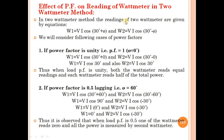Next point: the effect of power factor on the reading of the watt meter in the 2 watt meter method — this topic is frequently asked in exams. In the 2 watt meter method, the readings are given by: W1 = V·I·cos(30° + φ) and W2 = V·I·cos(30° − φ). We will consider the following cases of power factor.